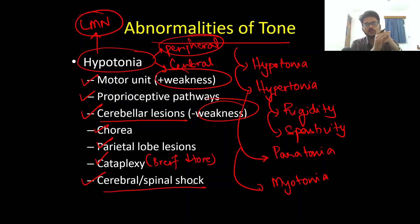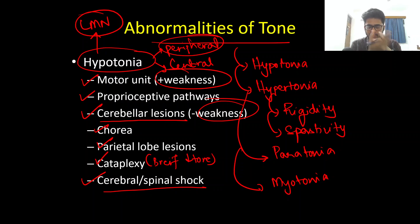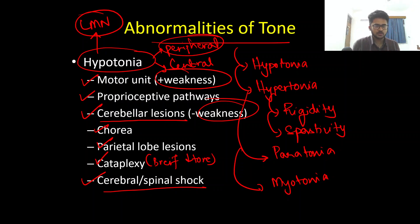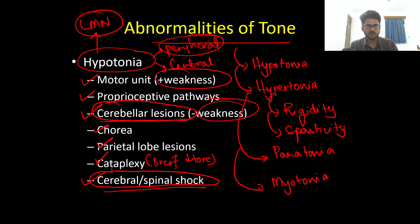Even though pyramidal involvement causes spasticity, in the acute scenario — such as an acute cerebral lesion like stroke or an acute spinal cord lesion like transverse myelitis — you will initially have a period of hypotonia. This is known as cerebral or spinal shock, and it is not long-lasting; it will eventually be replaced by spasticity. The two important central causes of hypotonia to remember are: cerebral lesions, and cerebral or spinal shock.